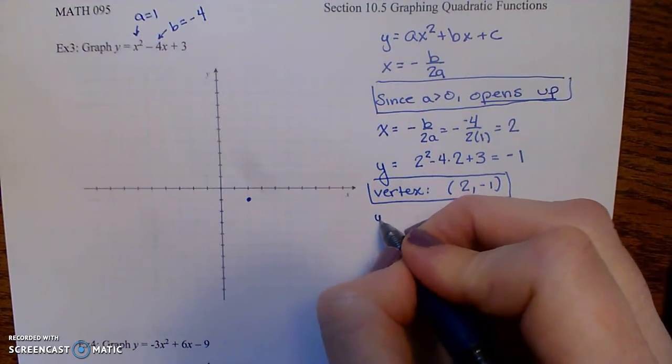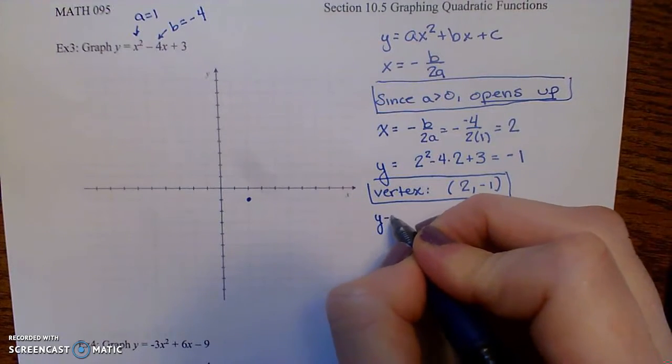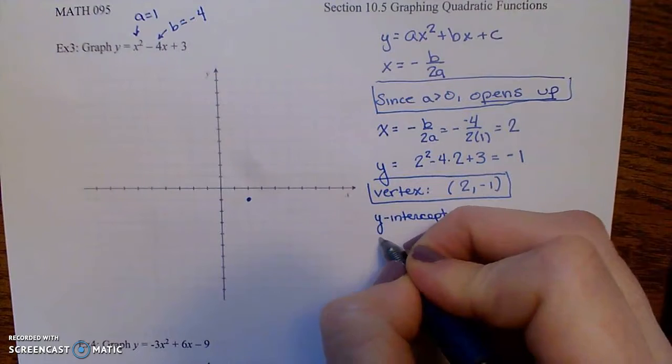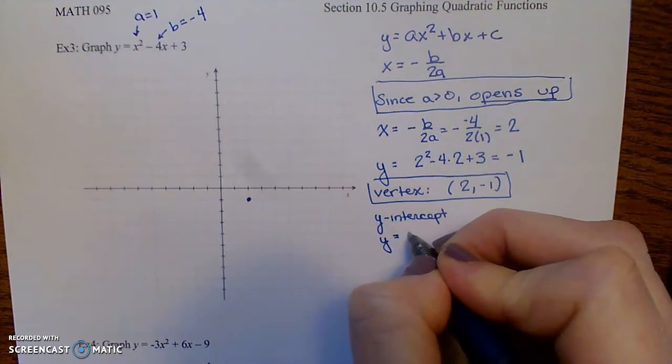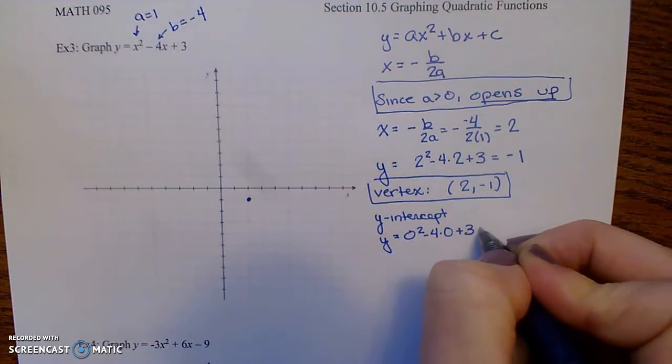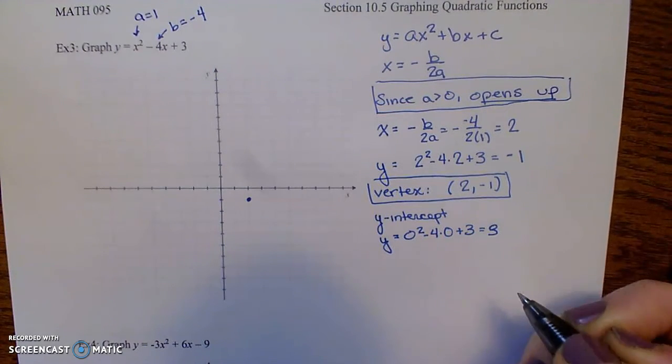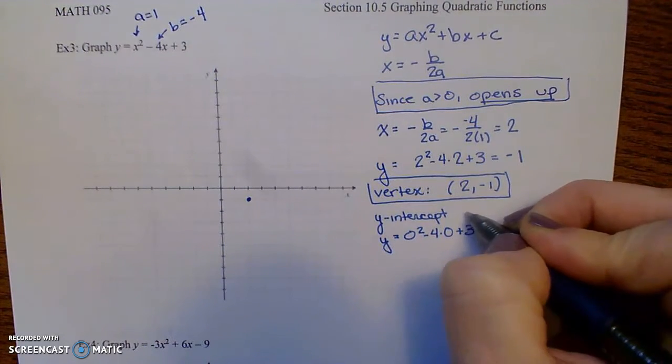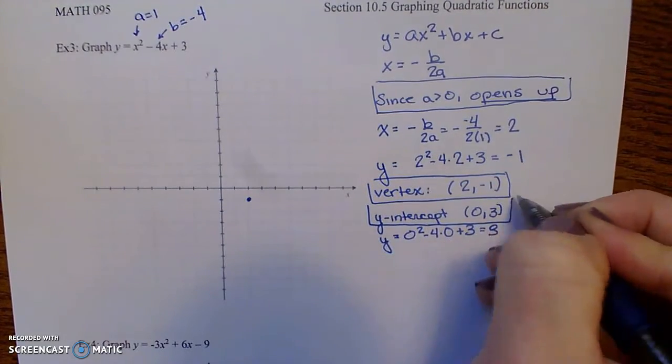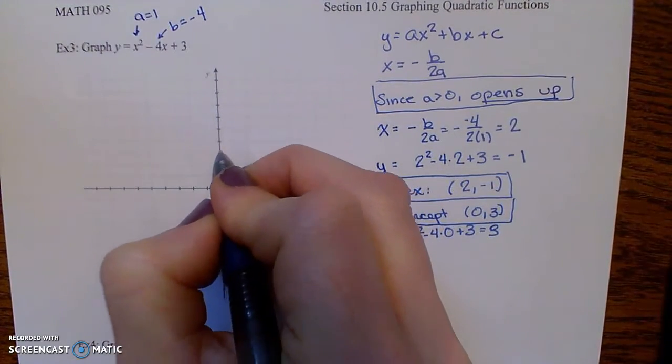Let's find the y-intercept. We find the y-intercept by plugging in x equals 0. So that'll be 0 squared minus 4 times 0 plus 3. So it's just 3. So my y-intercept is 0 comma 3. Let's go ahead and plot that point.